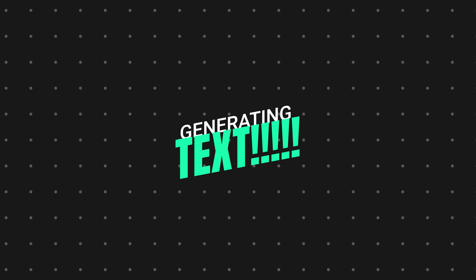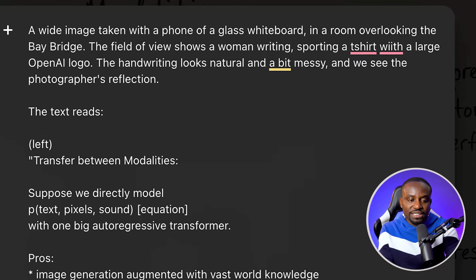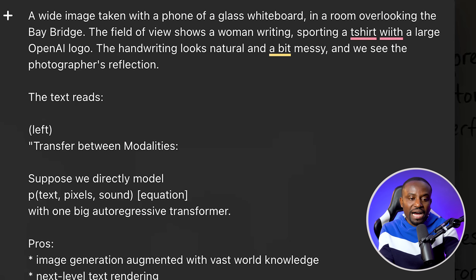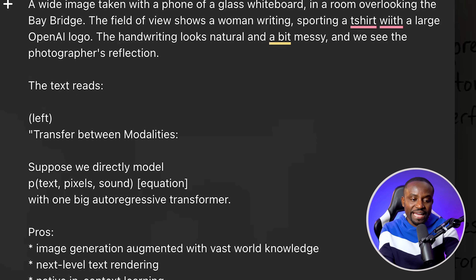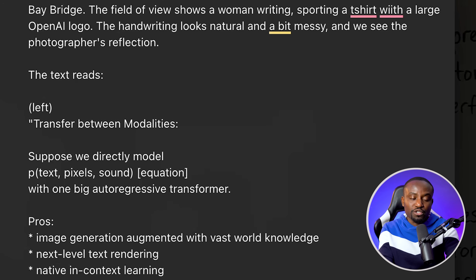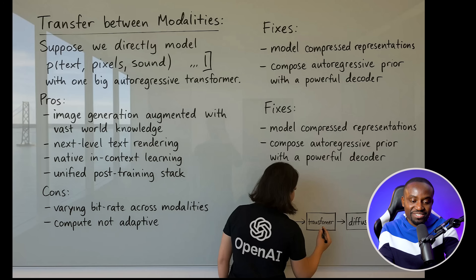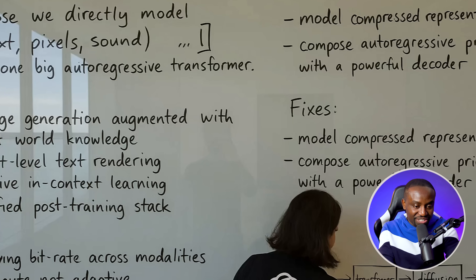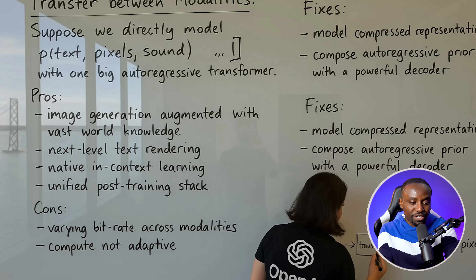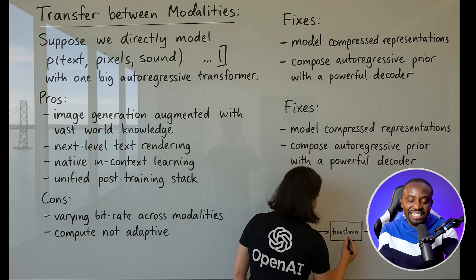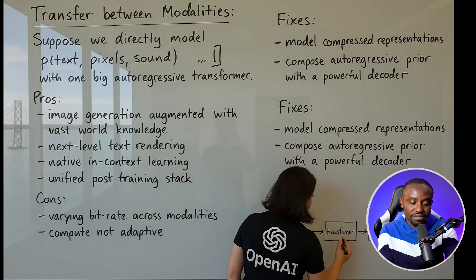Now let's talk about text generation. This is an area where this model shines the most. I'll say authoritatively that there is no other model out there today that can generate text as well on an image as this model does. The prompt here was for a photo of a glass whiteboard in a room overlooking the Bay Bridge, with a woman writing on it — the handwriting a little natural and messy — with a photographer in the reflection, and specific text on the whiteboard. Look at how well it adhered to that: you can see the OpenAI logo on the back of the t-shirt, the reflection of the photographer, the Bay Bridge out the window, and the text is incredible. I have been blown away by how well it handles text every time I try to push it to its limits.